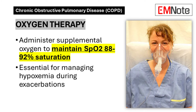Oxygen therapy is a critical component in managing hypoxemia during COPD exacerbations. The goal is to maintain oxygen saturation between 88% to 92%, striking a balance between adequate oxygenation and the risk of carbon dioxide retention in some COPD patients. Careful titration and monitoring are essential to achieve this target while avoiding the potential complications of excessive oxygen administration.